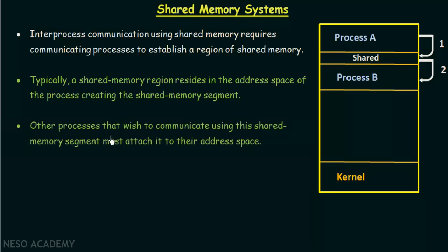Other processes that wish to communicate using this shared memory segment must attach it to their address space. In this example, process B wants to communicate, so what it has to do is attach the region of shared memory created by process A to its own address space. This shared memory region is created by process A, and process B must also attach this region to its address space so that the region is shared between process A and process B.